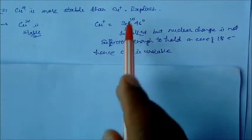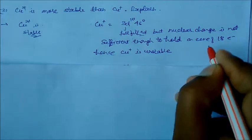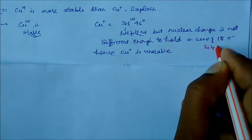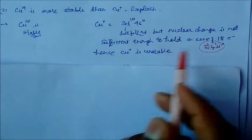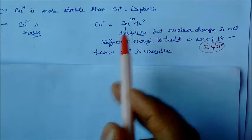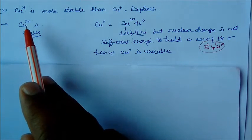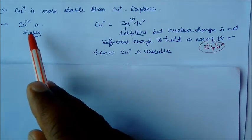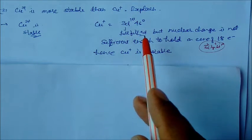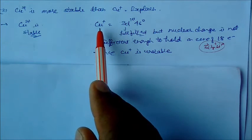3s, 3p, and 3d - 18 electrons means we can take both the 3s, 3p, and 3d, so it becomes 10 plus 6 plus 2, all 18 electrons. This has to be held by the nucleus. While if you take the 2+ state, both charges are equal, so here it can hold electrons easily. Here electrons are not held, so copper Cu+ is less stable than Cu2+.